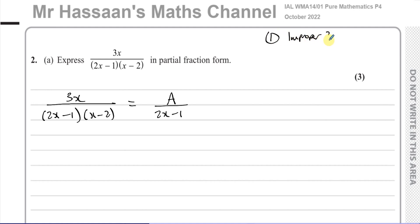If it's an improper fraction, we have to split it into a whole number and a proper fraction part. This is a proper fraction, so we can go straight ahead and split it up. The highest power in the numerator is 1; the denominator, if expanded, has highest power 2 — it's a quadratic. So we have power of 1 over power of 2, making it a proper fraction.